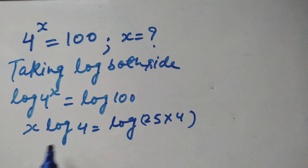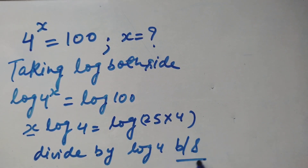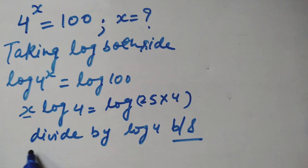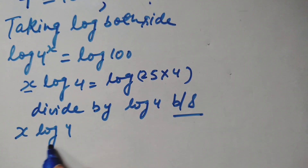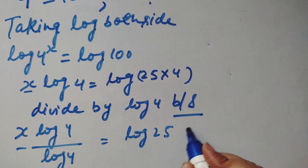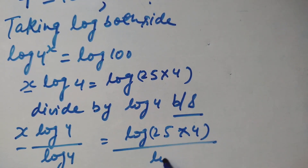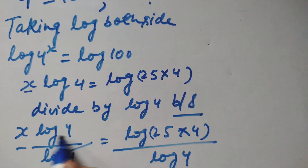After that we need to find the value of x. So we divide log 4 by log 4 — here we also divide by log 4 on the right side — so log 4 cancels out.